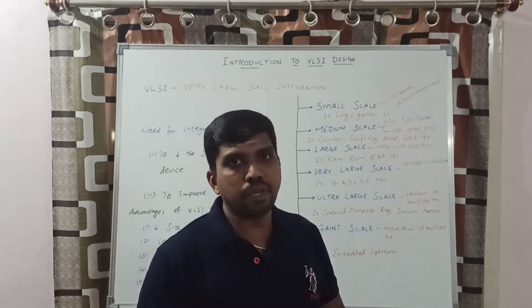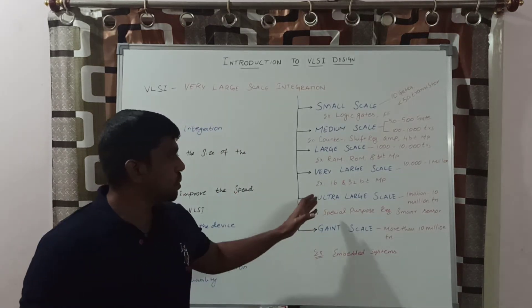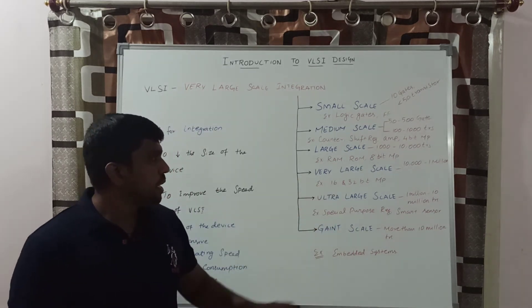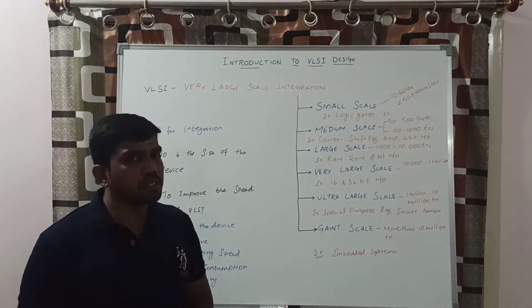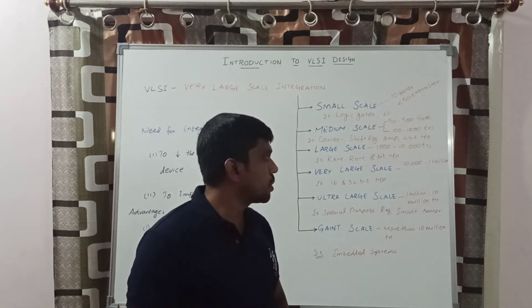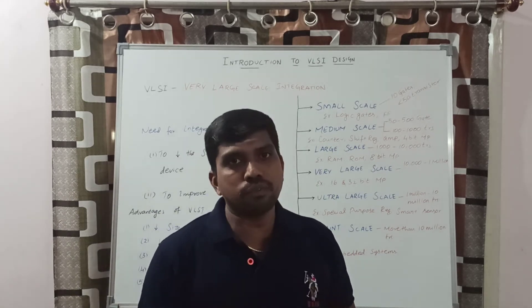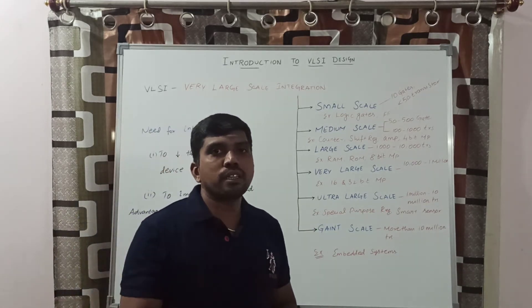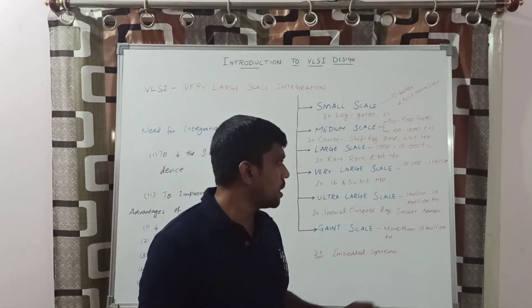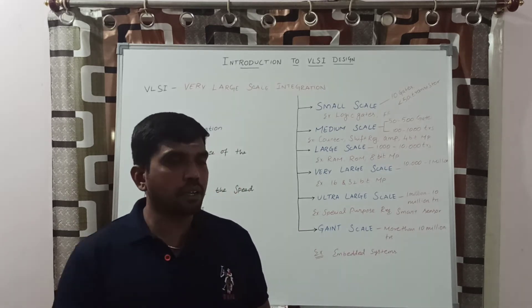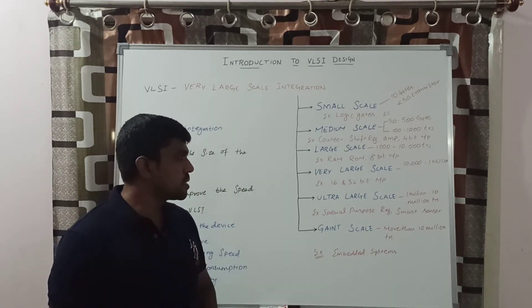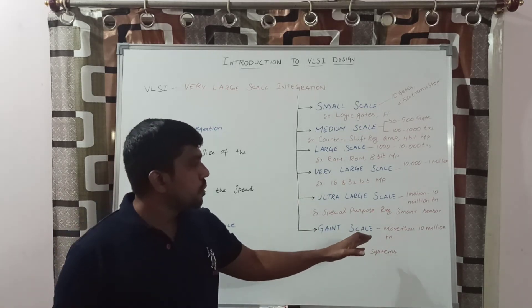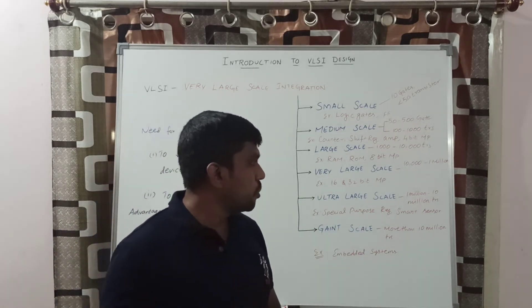The next one is Ultra Large Scale Integration (ULSI) — it is a very high version. In ULSI, you can use 1 million to 10 million transistors. The final one is Giga Scale Integration (GSI), which is the highest scale of integration, using more than 10 million transistors. Its application includes embedded systems.